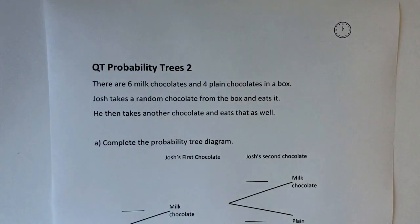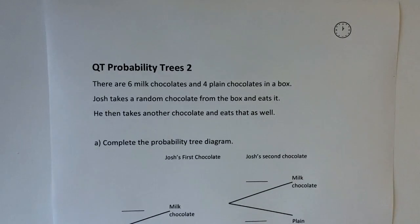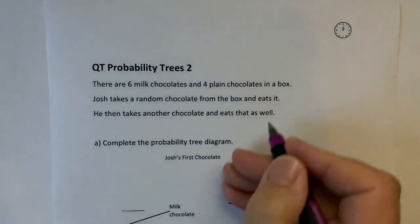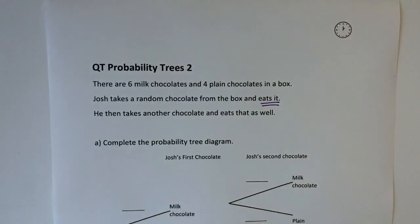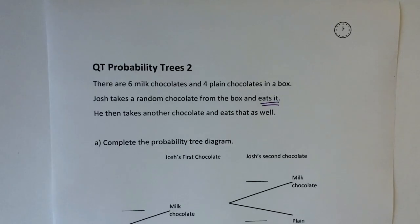Hi, this is another video in the playlist where we're looking at probability trees. In this particular one we've got a box of chocolates — six milk chocolates and four plain chocolates. John takes a random chocolate from the box and, importantly, he eats it. So the second time round when he takes another chocolate there's going to be less chocolates in the box — there's actually going to be one missing. Let's see how that works with the probability tree diagram we are first being asked to complete.